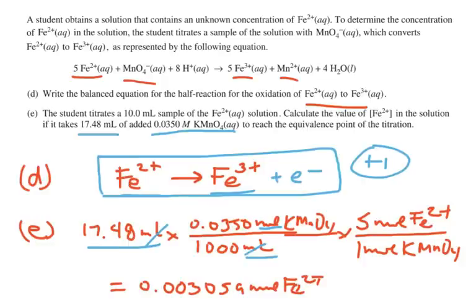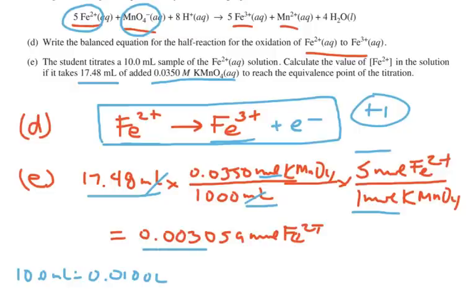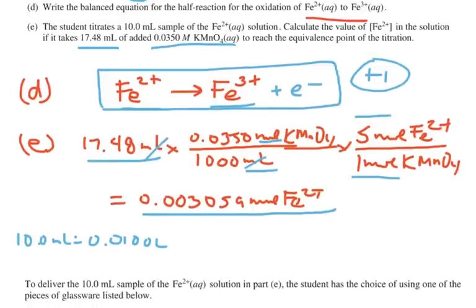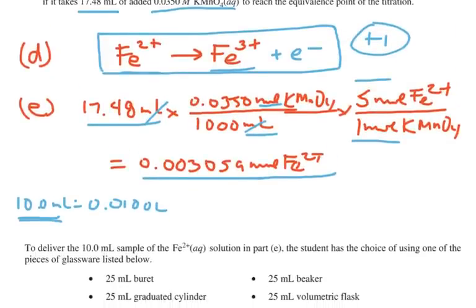So we're going to say, we took 17.48 milliliters, and we're going to go from milliliters to liters, so we're using our molarity, milliliters to moles, using our molarity as a conversion factor. So that's going to get us moles of KMnO4. And then we have to take into account the fact that for every one mole of MnO4, KMnO4, we need five moles of Fe2+. So we're going to have our stoichiometry step. So one mole of KMnO4 turns into five moles of Fe2+. So we get a value of 0.003509 moles of Fe2+. Now from there, this is a 10 milliliters solution, and 10 milliliters is 0.0100 liters. So we're going to take this, divide by 0.0100 liters of solution, and we're just going to move the decimal place over.